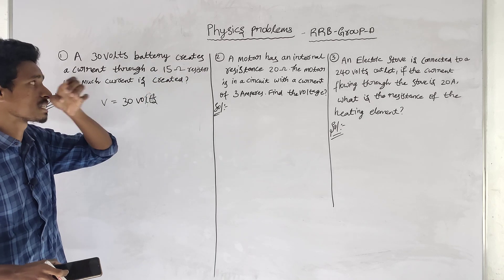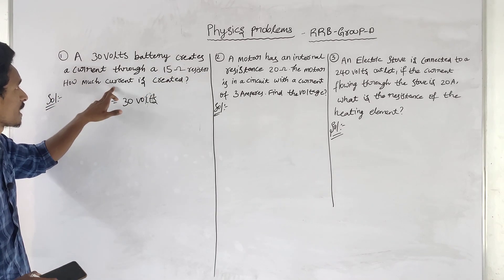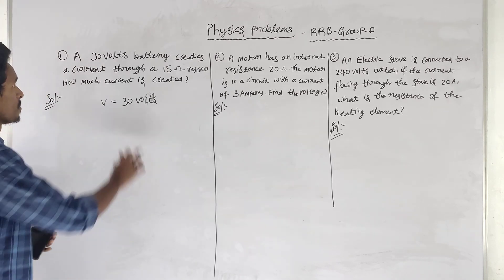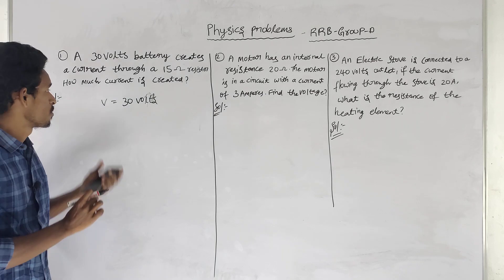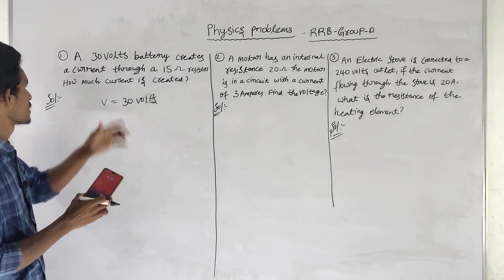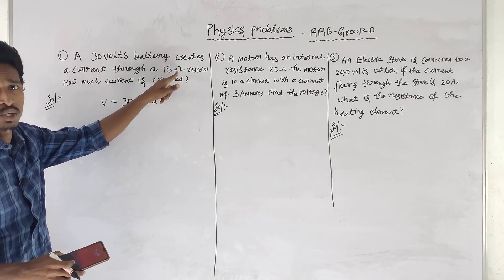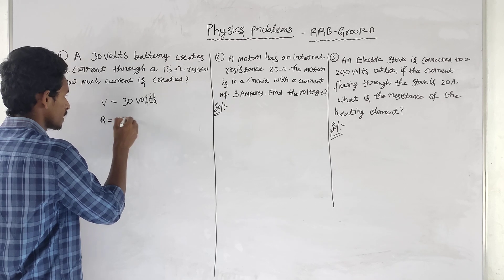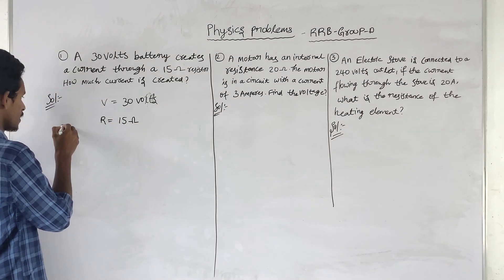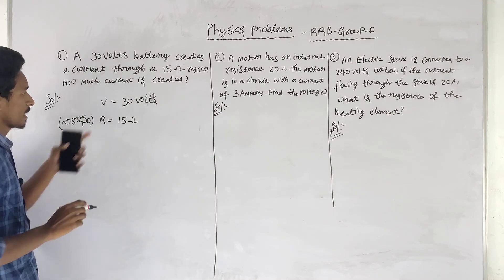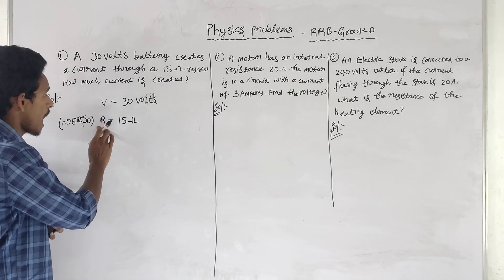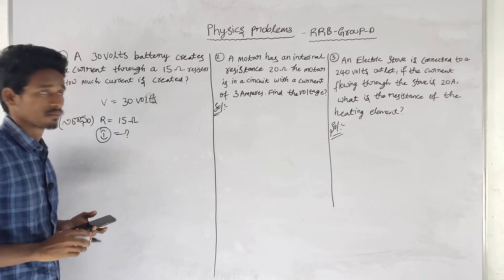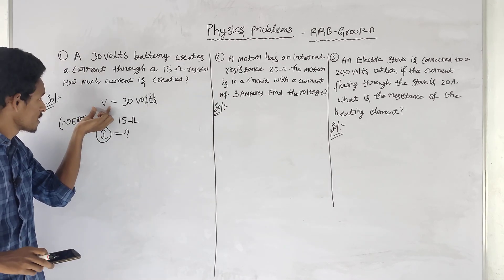We have 15 ohm resistance. The resistance R is equal to 15 ohms. The current devil is the result of the potential difference and current.